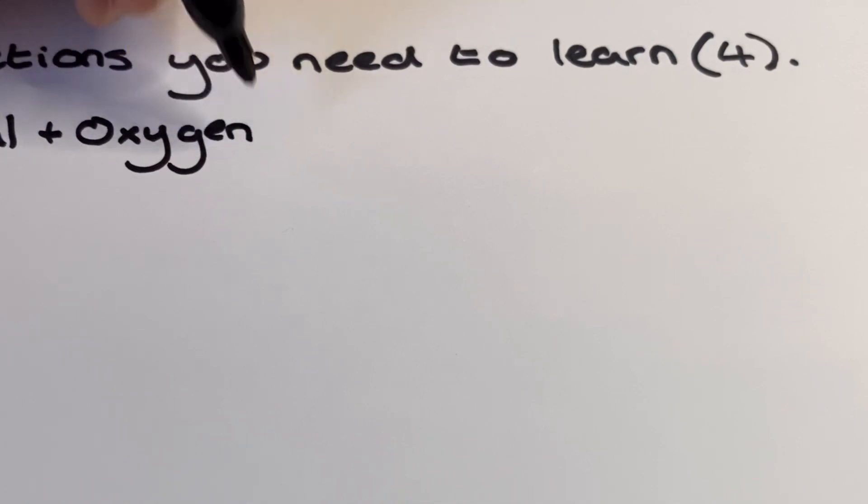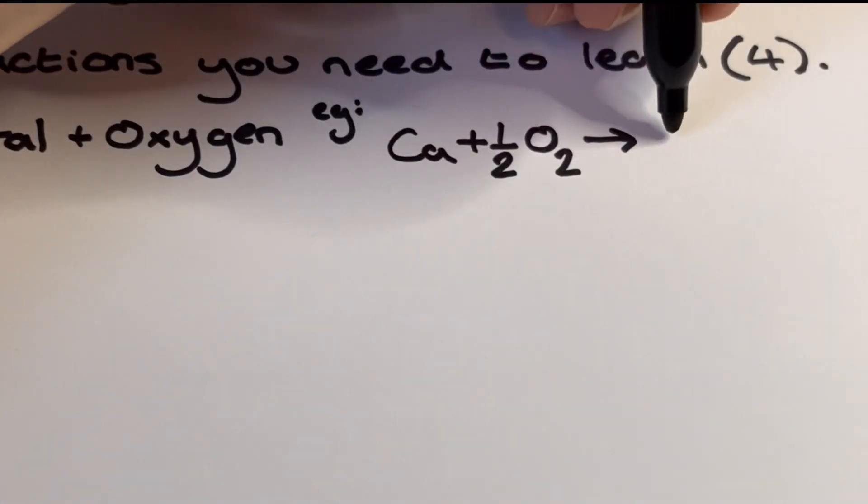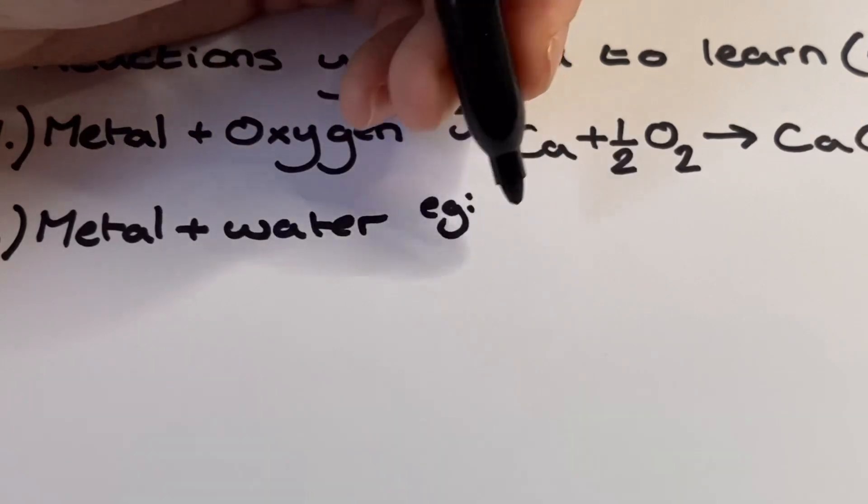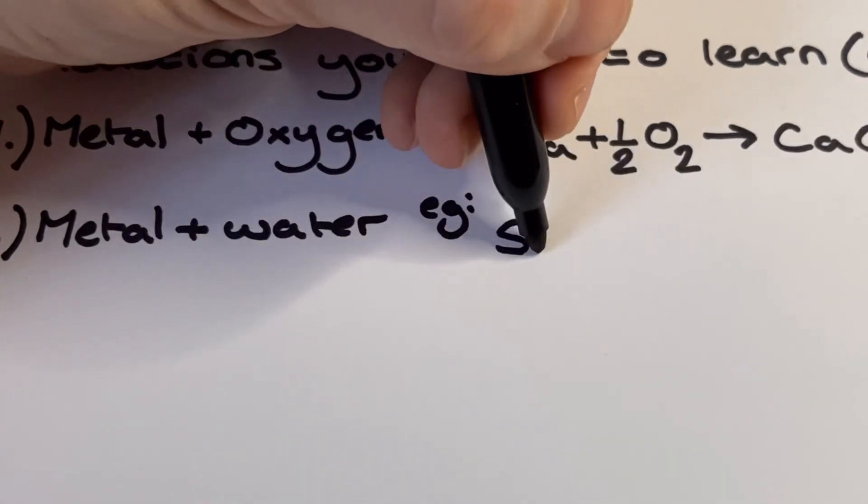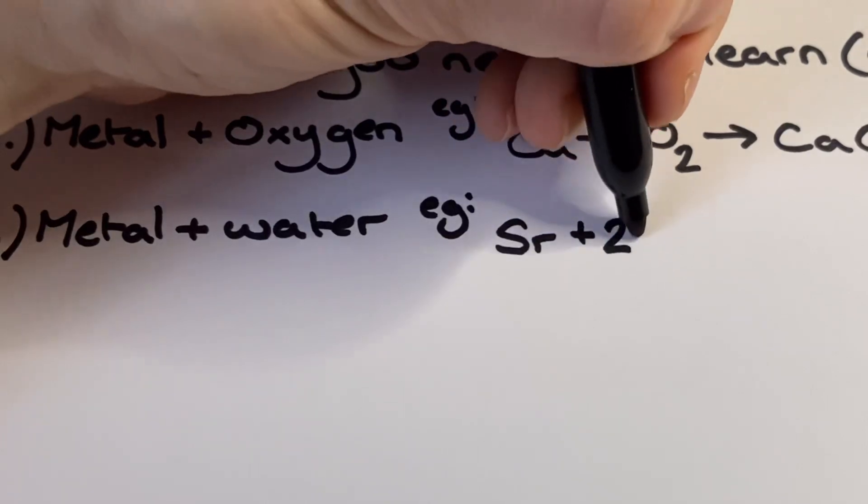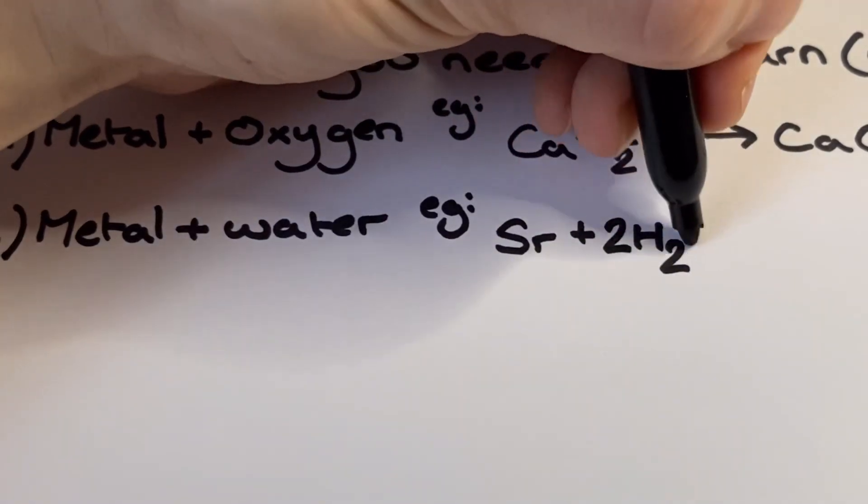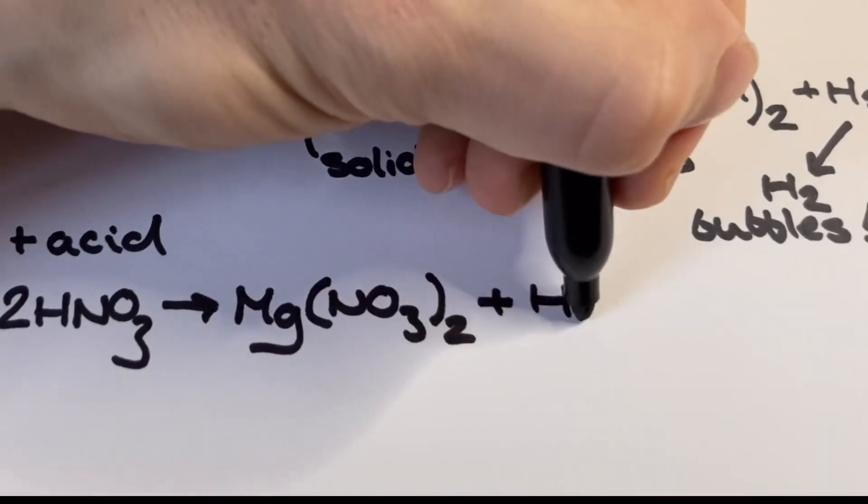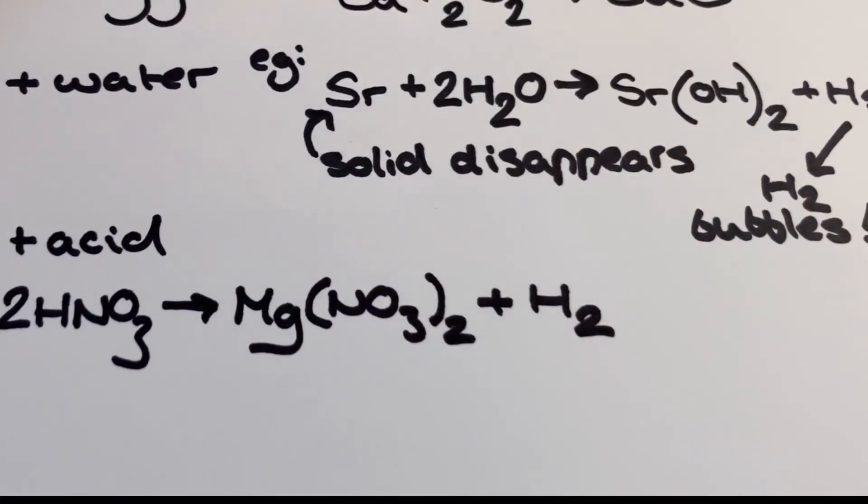Now that we've seen that our group 2 metals oxidize when they react, we're going to consider three different reactions that demonstrate this. We're then going to consider a fourth reaction that doesn't actually demonstrate any redox but does involve a group 2 metal oxide reacting with water.